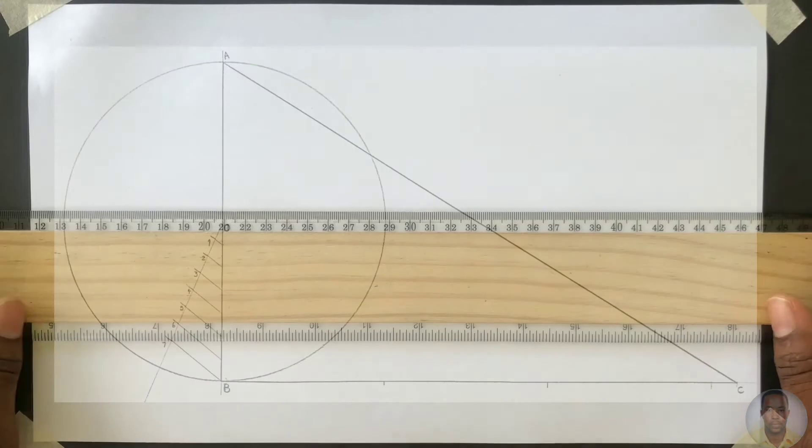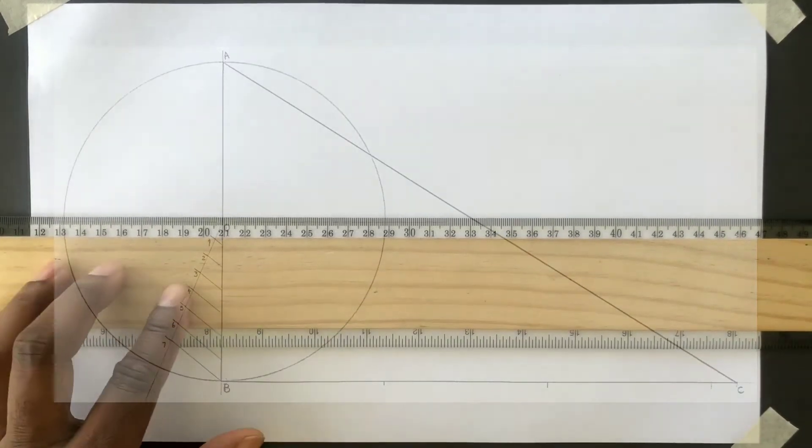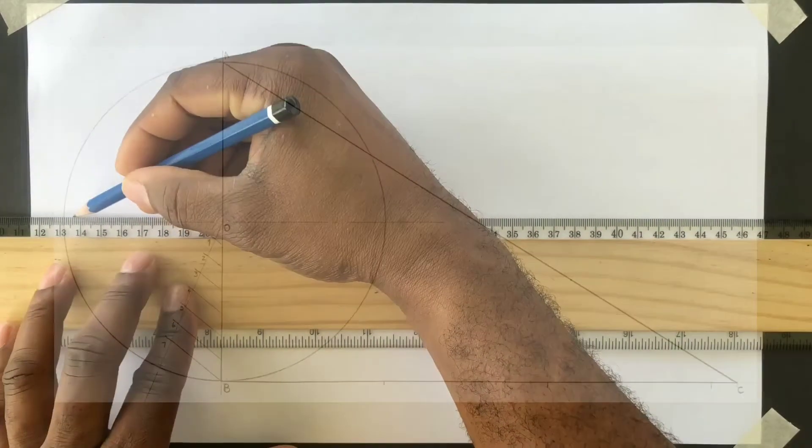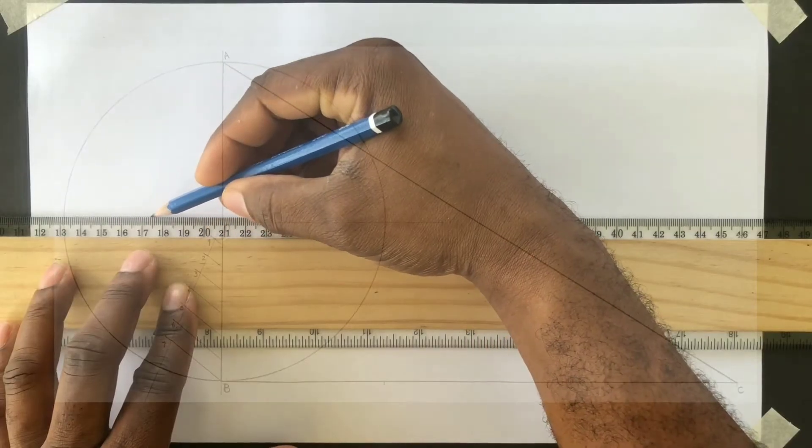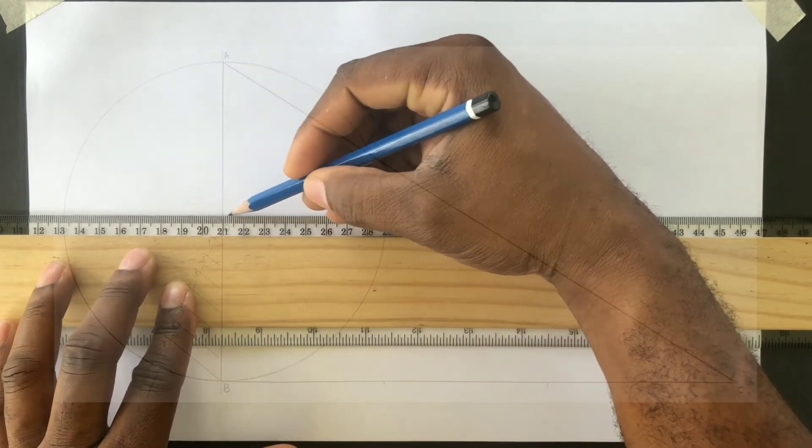You will first draw center lines to identify the center of your circle. These center lines will intersect each other at 90 degrees.